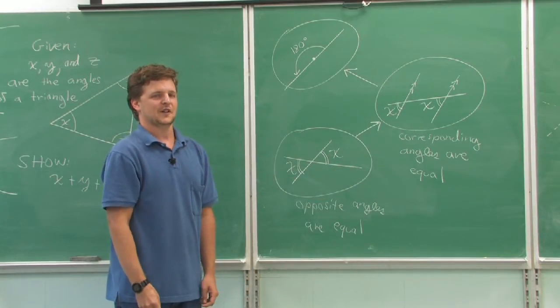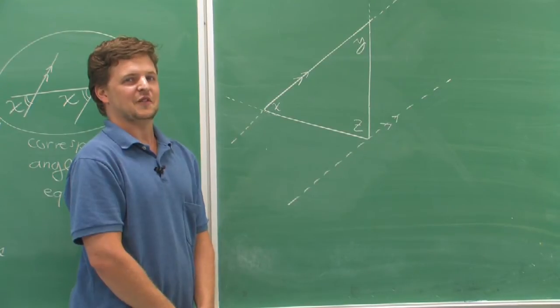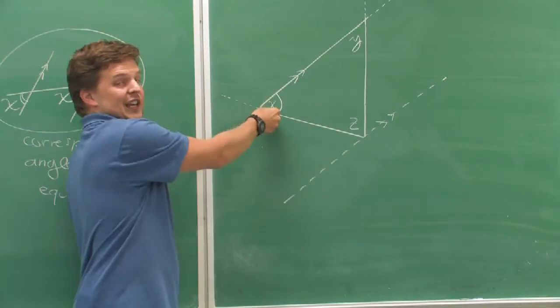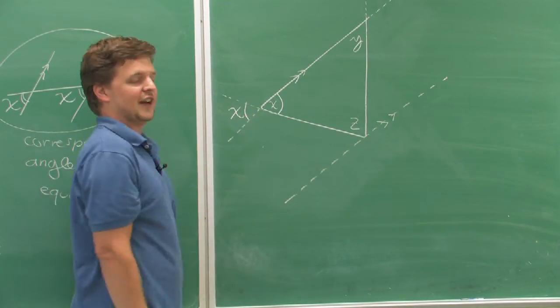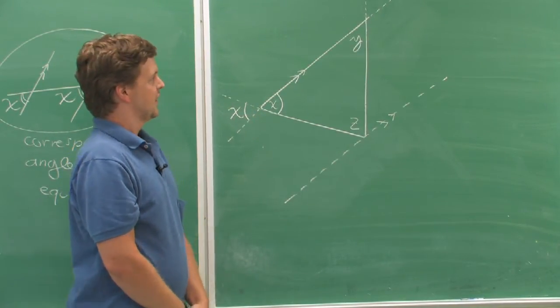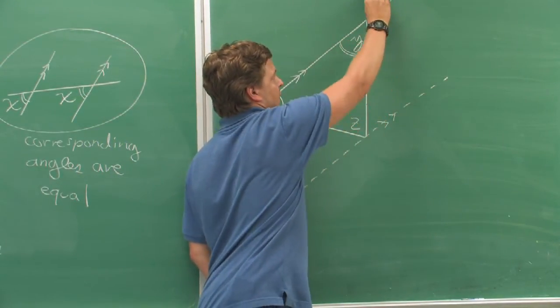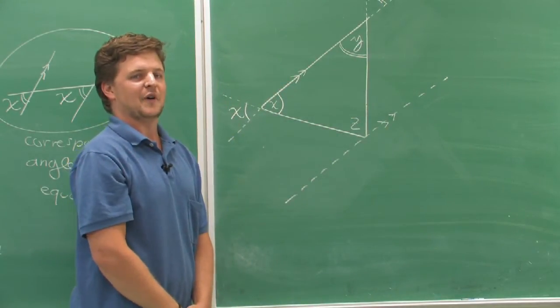Let me show you how that works on the original triangle. First, I can use the fact that those opposite angles are equal. This angle x is exactly the same as this angle—I'll call it x. And this angle y is exactly the same as that angle—I'll call it y.